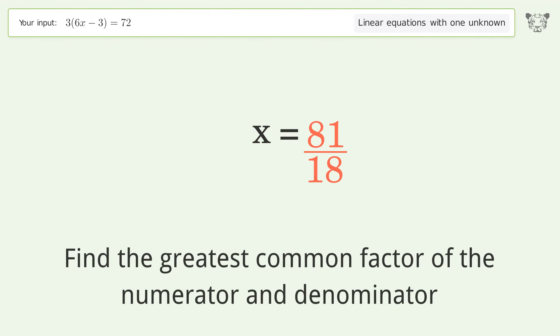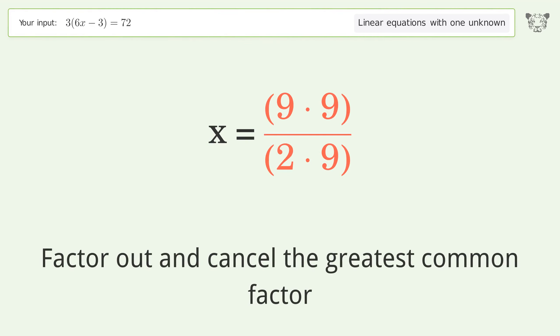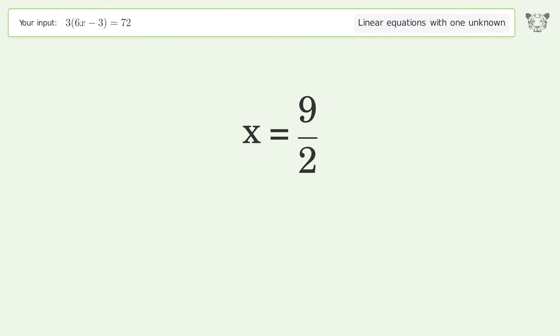Find the greatest common factor of the numerator and denominator. Factor out and cancel the greatest common factor. And so the final result is x equals 9 over 2.